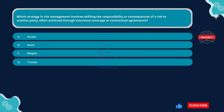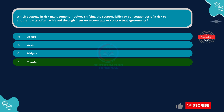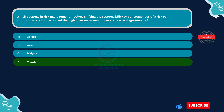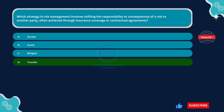The correct answer is Option D: Transfer. Transferring a risk involves shifting the responsibility or consequences of the risk to another party. This is often achieved through insurance coverage, where the risk is transferred to the insurer in exchange for payment of premiums. Contractual agreements can also be used to transfer risk by allocating responsibility to other parties involved in a project or business venture.